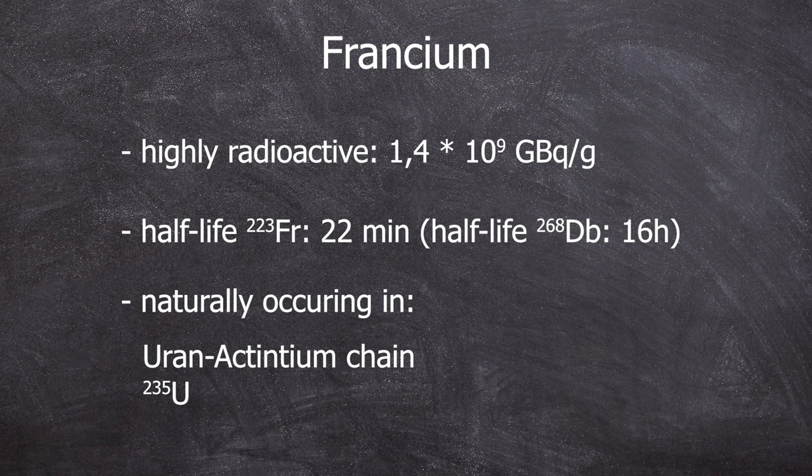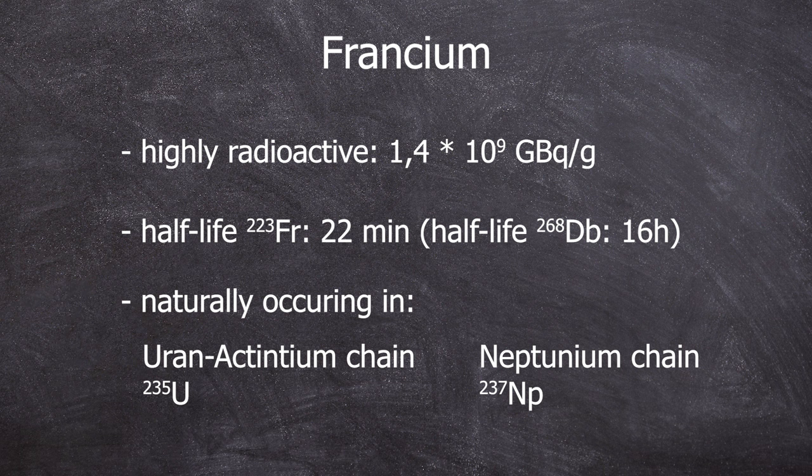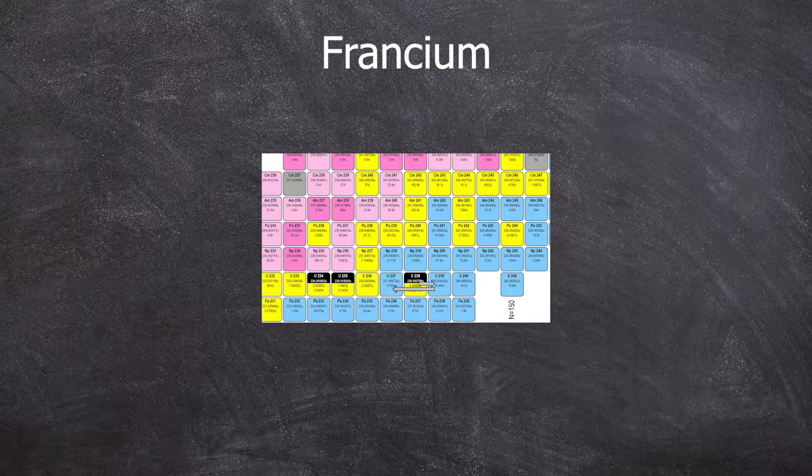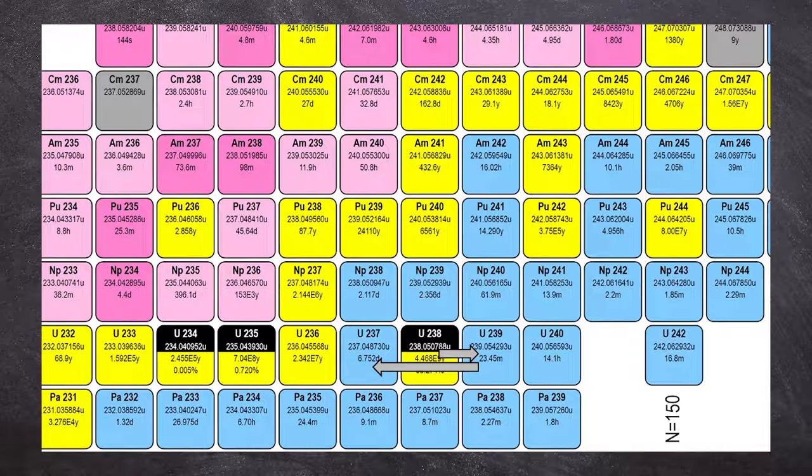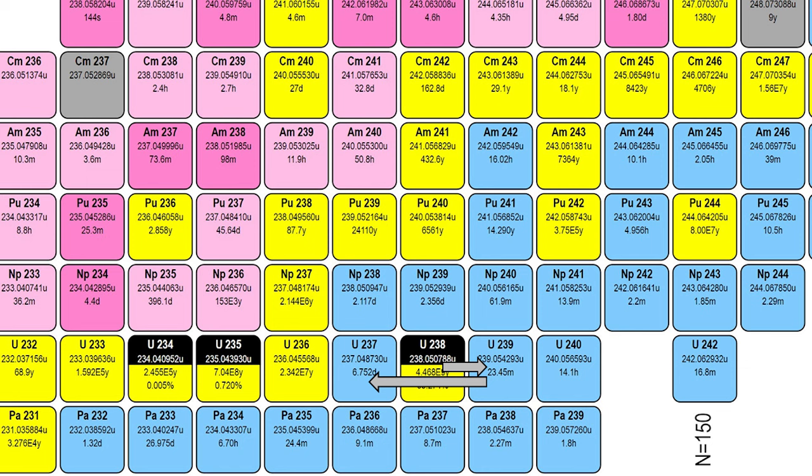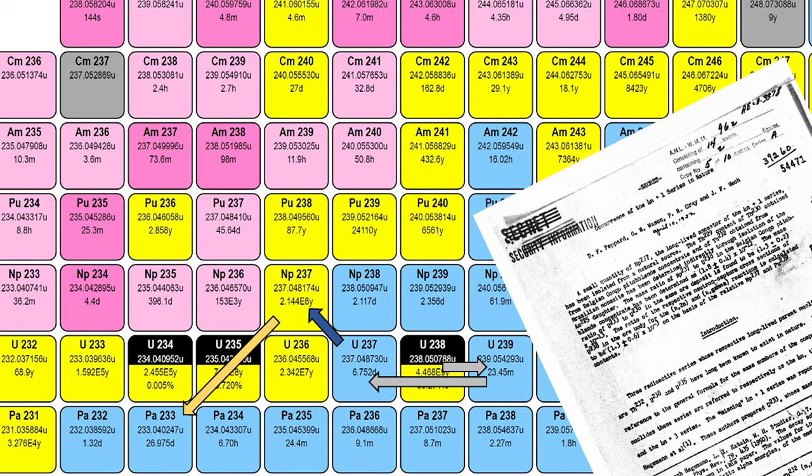The classical neptunium decay chain no longer exists as we know from the video Primordial radionuclides. It has completely decayed by now, but there is an incredibly absurd special case where in a mineral, a U-238 atom captures a neutron and via an N2N reaction becomes uranium-237, which then decays into neptunium-237.